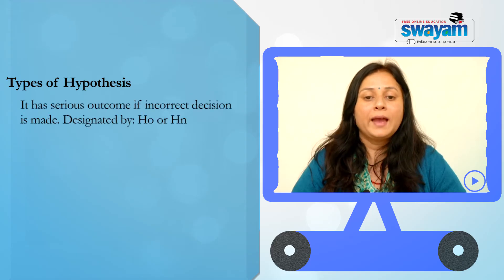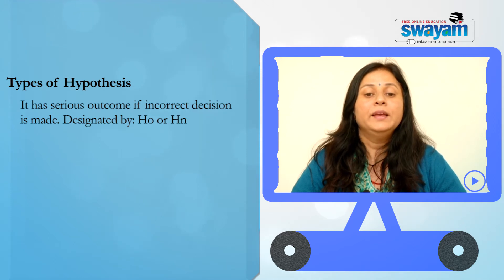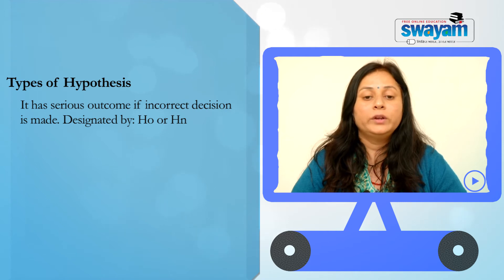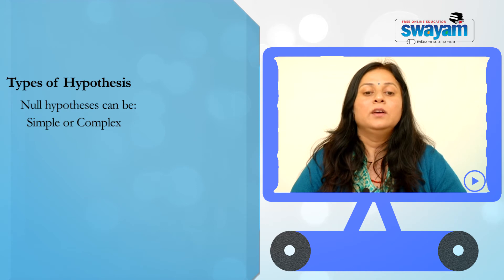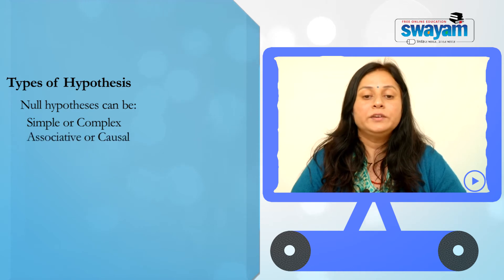The null hypothesis represents a theory that has been put forward either because it is believed to be true or because it is to be used as a basis for argument, but has not been proved. This has serious outcome if an incorrect decision is made, and the null hypothesis is designated by either H0 or HN. Null hypothesis can be simple or complex or associative or causal.